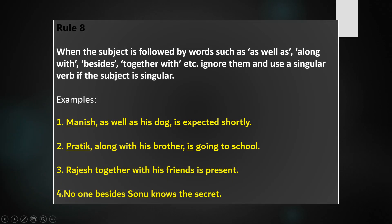Rule 8: When the subject is followed by words such as as well as, along with, besides, together with, etc., ignore them and use a singular verb if the subject is singular. In all the examples, we focus on the subject and get the verb to agree with the subject.